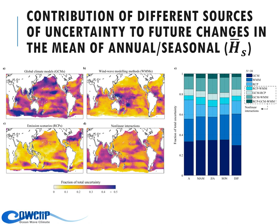This shows the contribution of different sources of uncertainty, including differences from global circulation models, differences due to wave modeling, and differences due to the emission scenario. Of course, the impact of the global climate model is the largest. However, the impact of wave modeling has significant effects on future wave climate projections. We need to carefully analyze this future change signal, including uncertainty from the different sources.